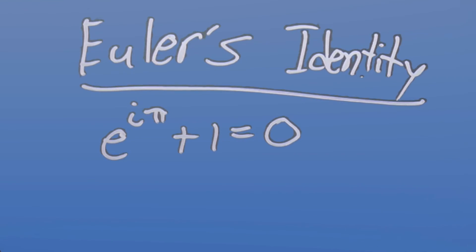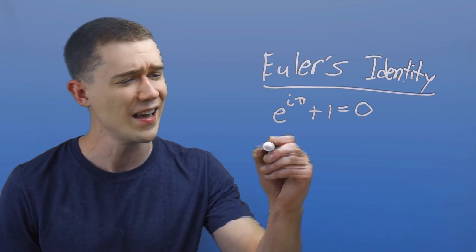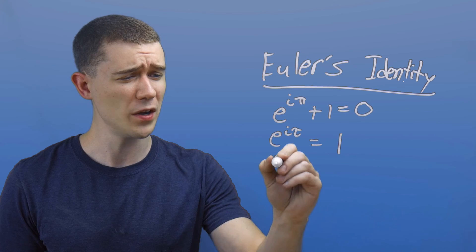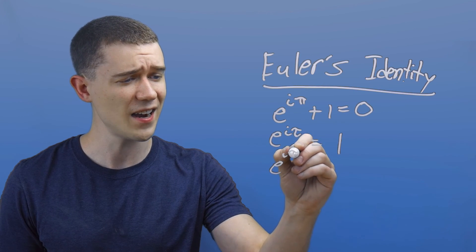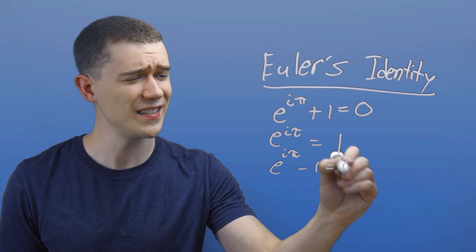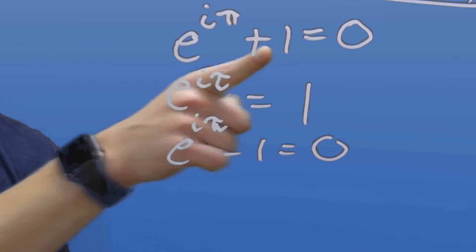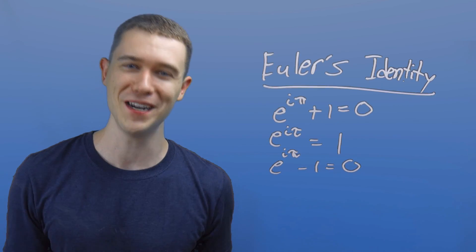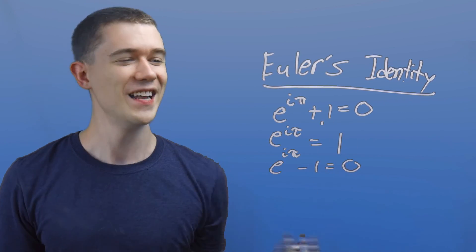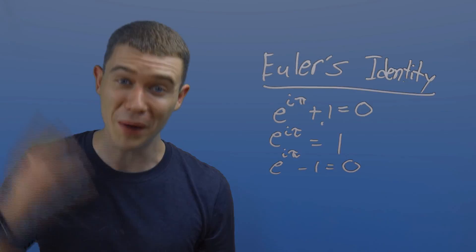come on, look at that equation. You're telling me tau should be there? Sure, e to the i tau equals one, but that's the same thing as saying e to the i tau minus one is zero. And now you've got a minus one instead of a plus one. No way minus one is better than plus one. This, this is the equation to use. We need to use pi.